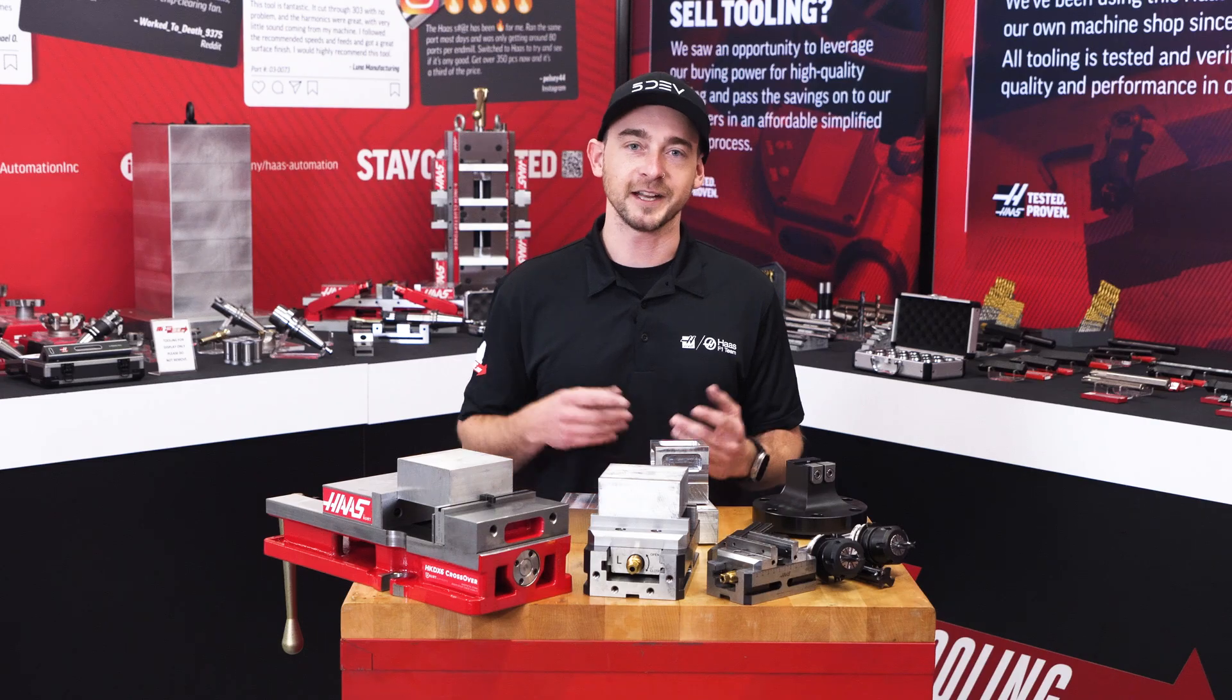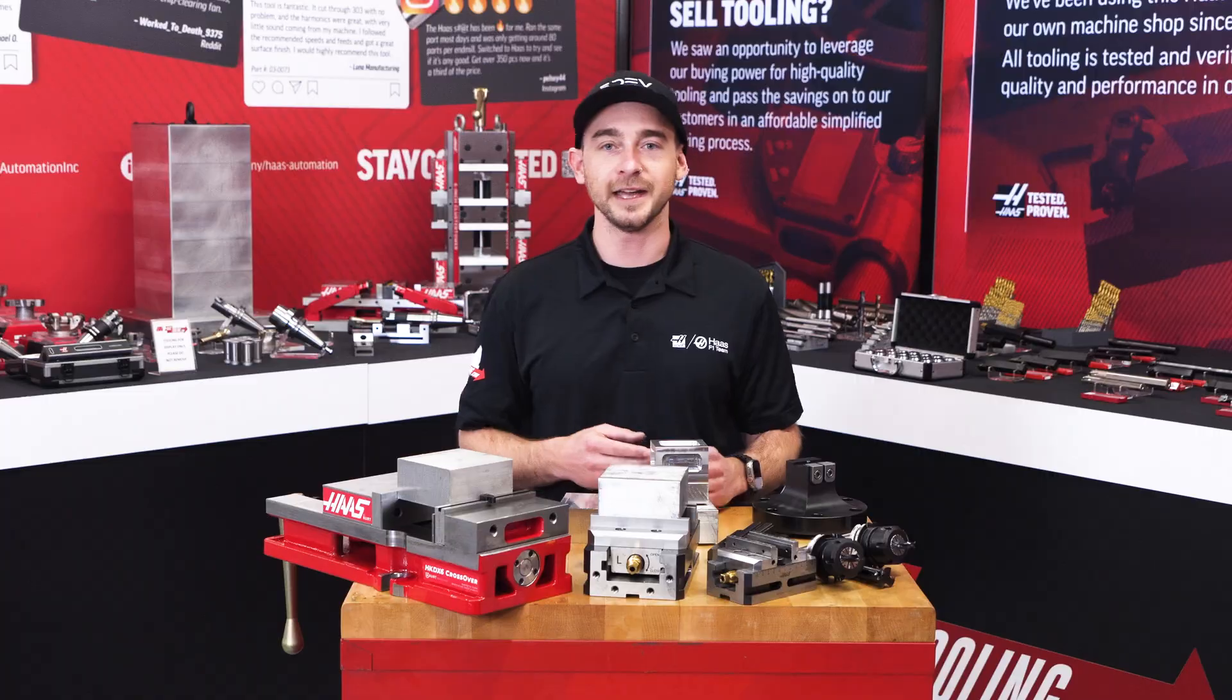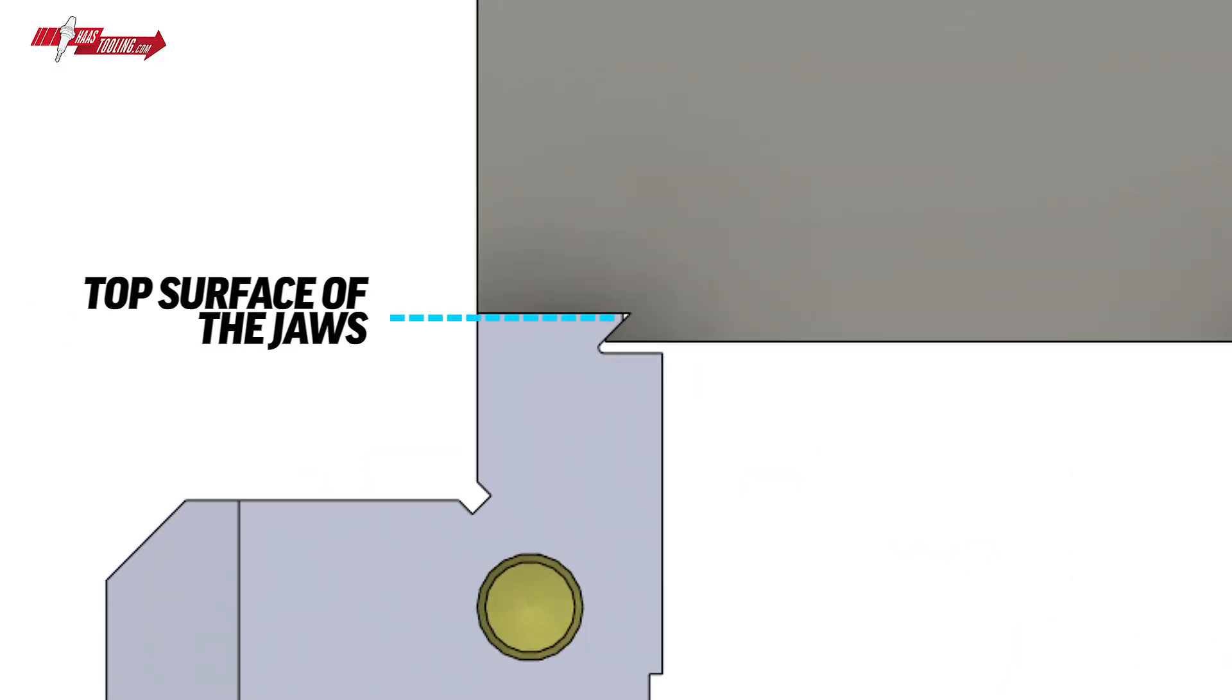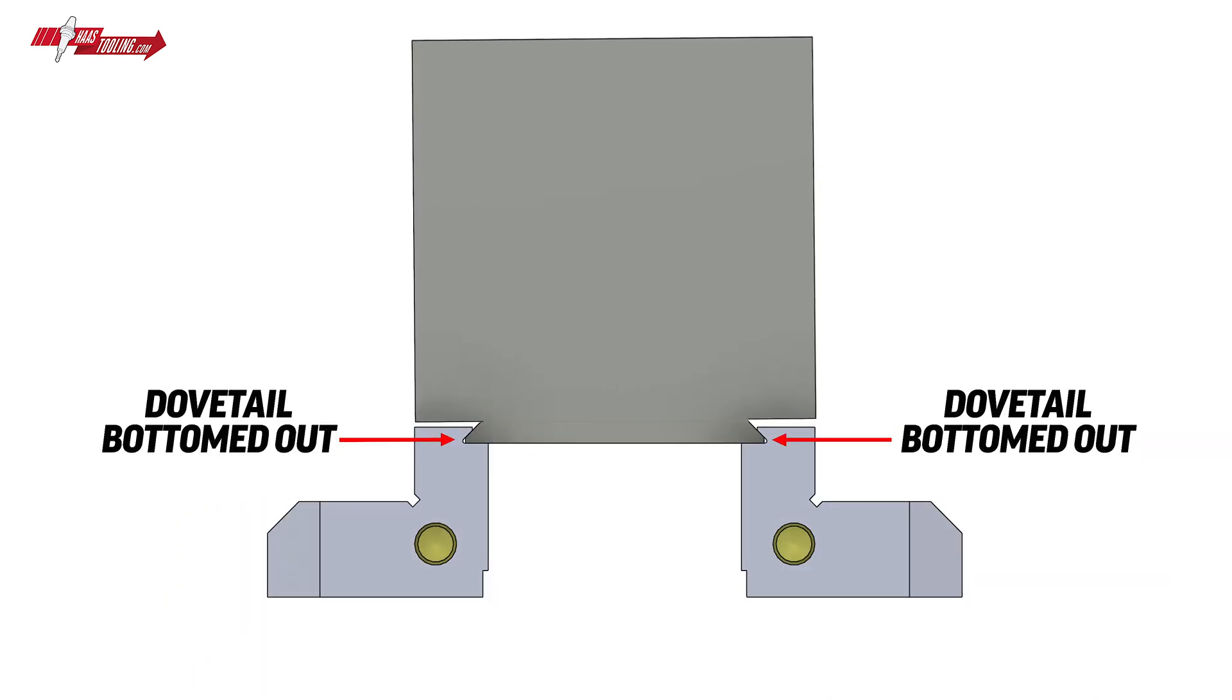Alright, let's talk about how to design and cut your dovetails. You only ever want contact with the top surface of the jaws and the angled base. If the dovetail bottoms out in the fixture, it allows the work piece to flex right here on the skinny part of the dovetail.